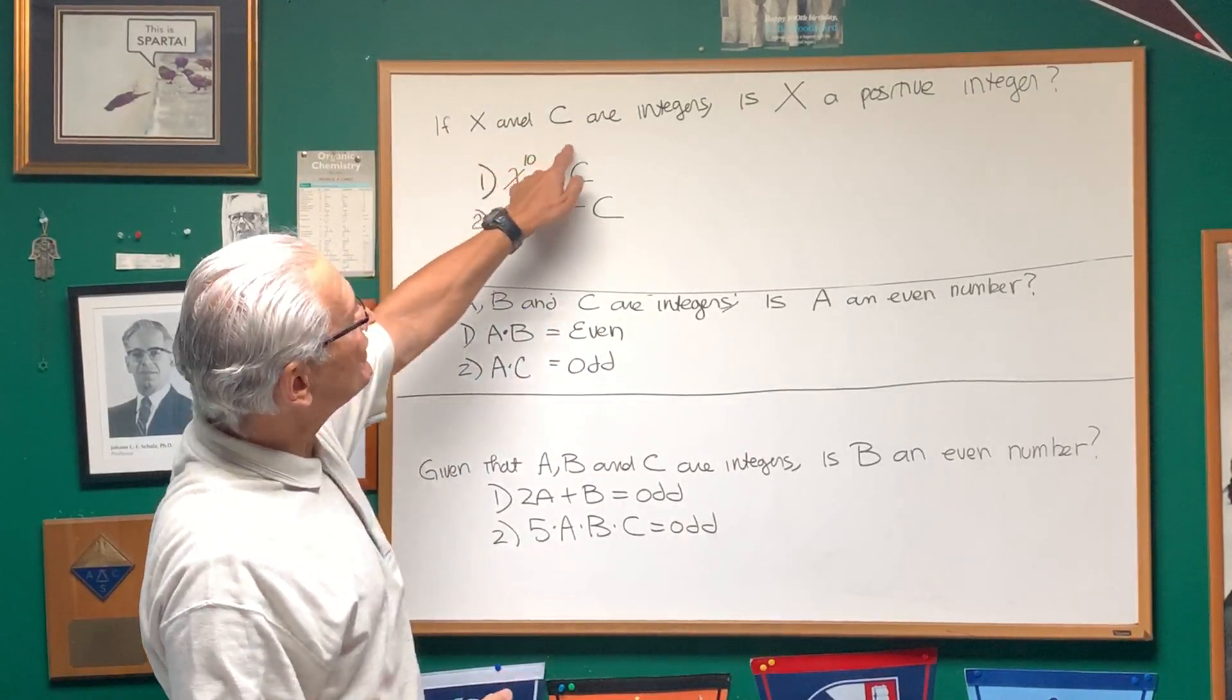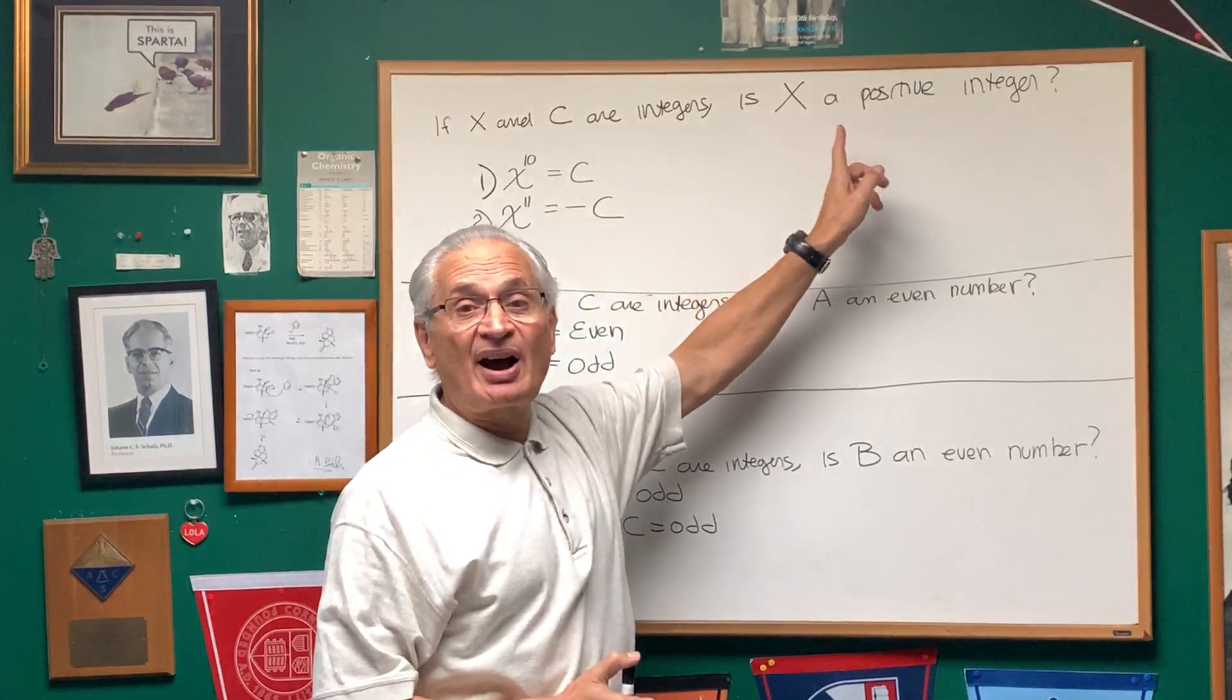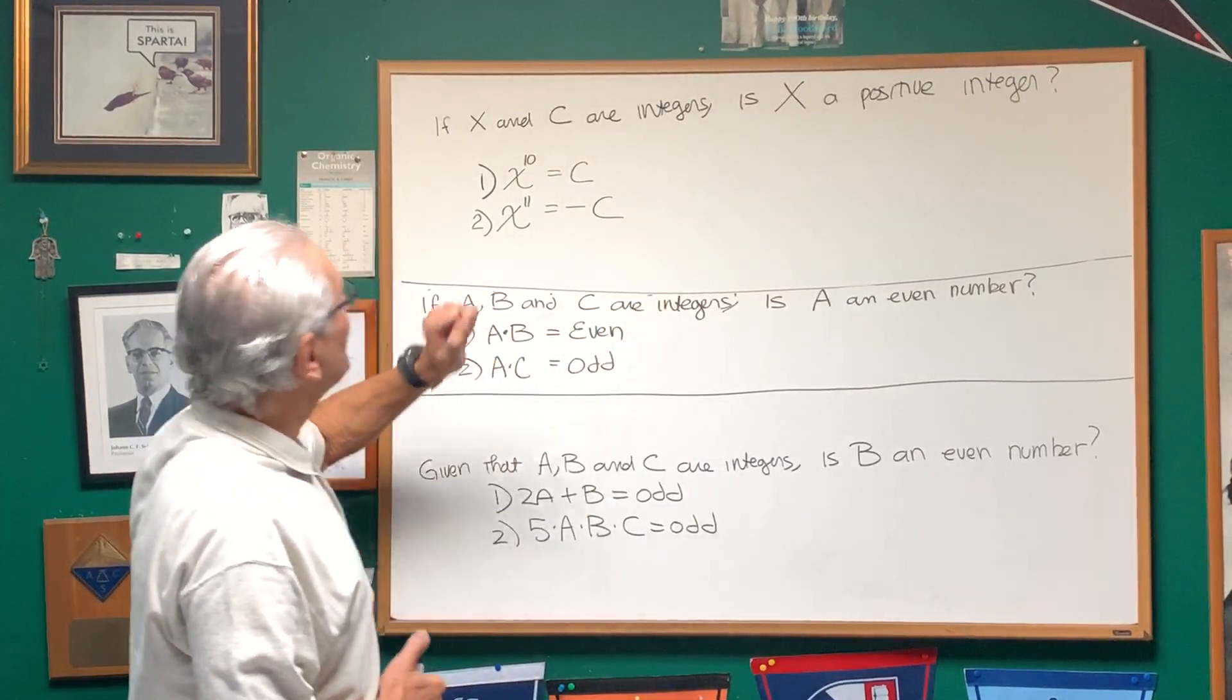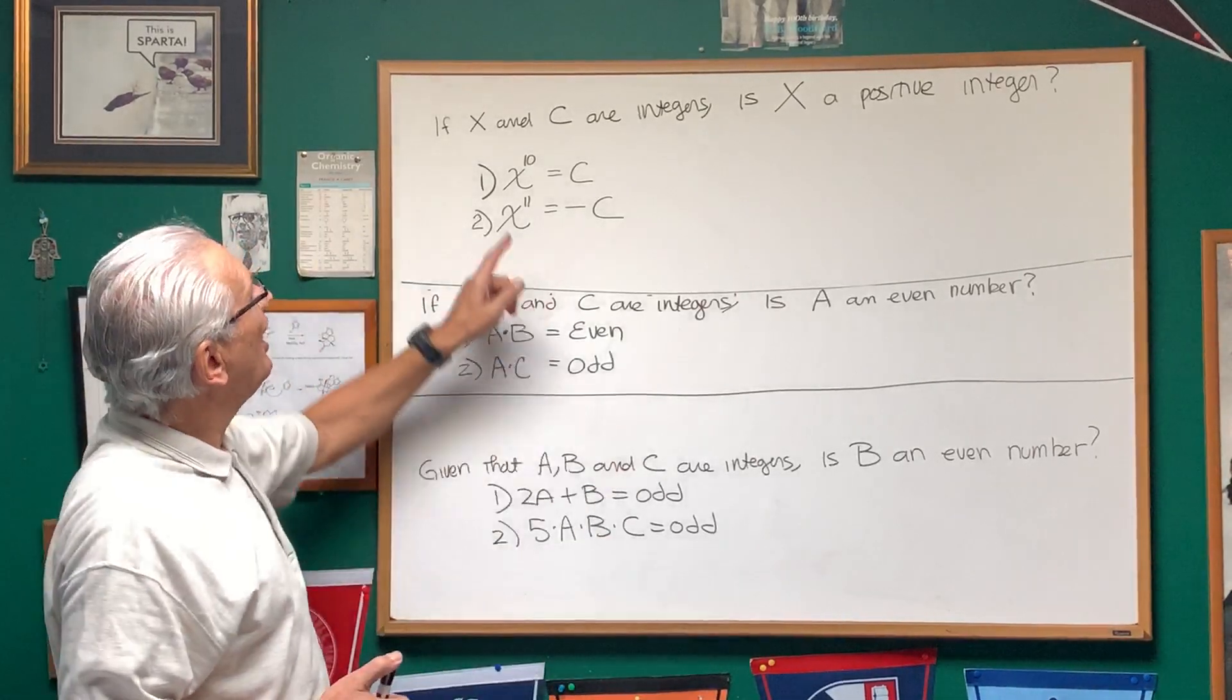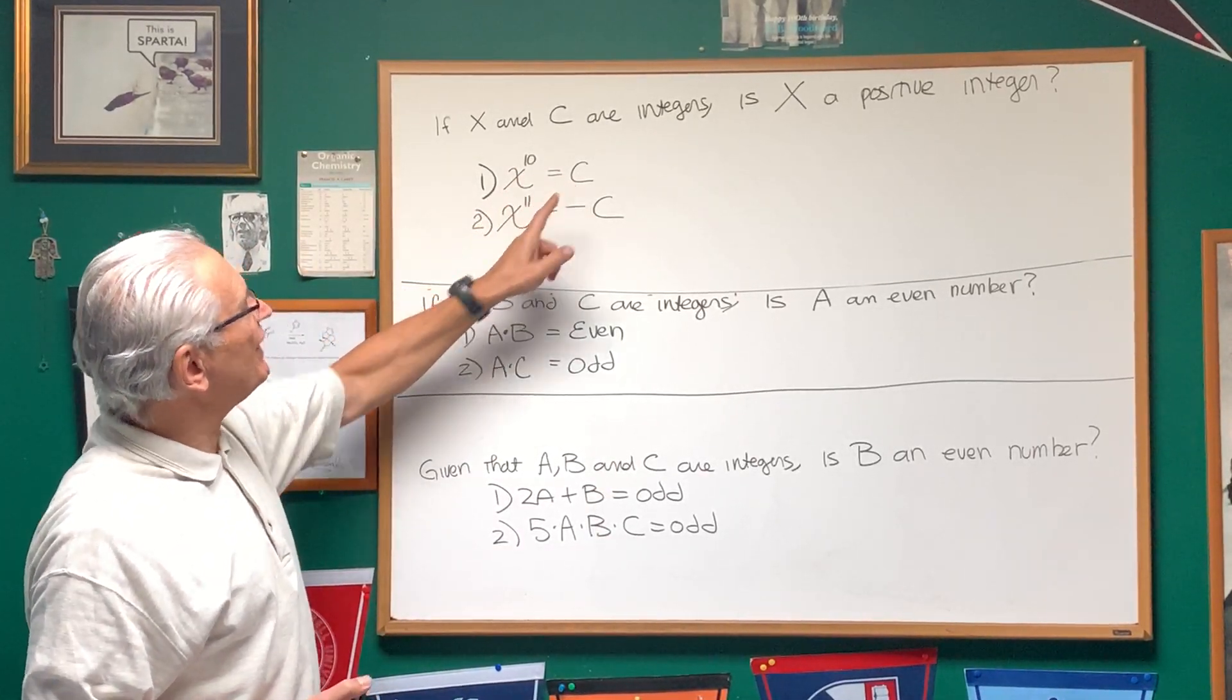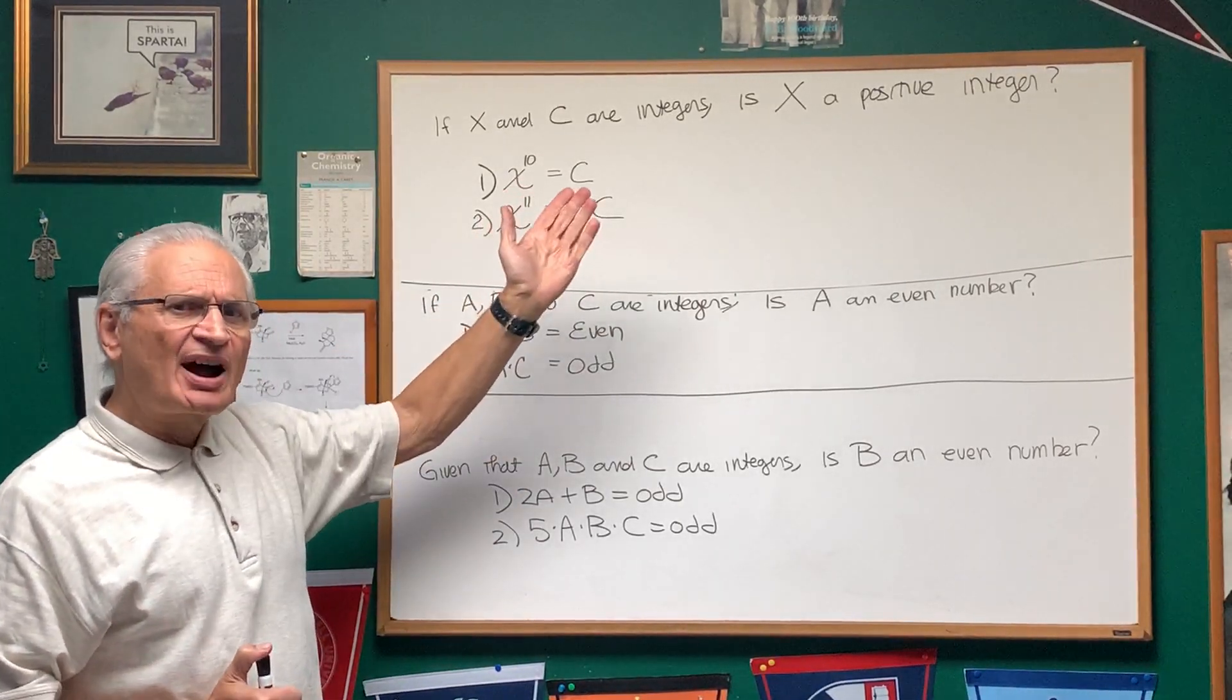If X and C are integers, the question is, is X a positive integer? We have two statements here, statement one and statement two as read in the preamble. X to the 10th power is C, X to the 11th power is negative C. Is X a positive integer?